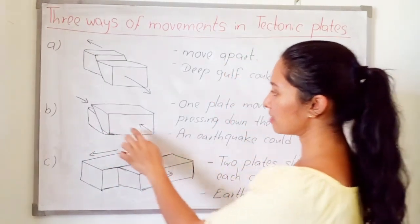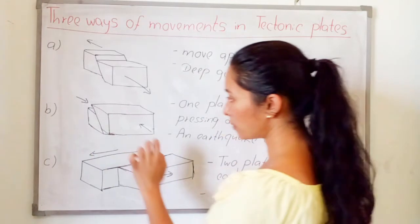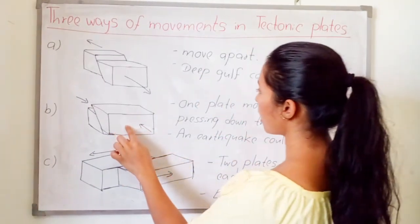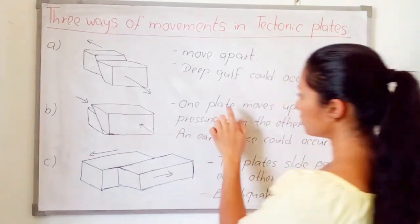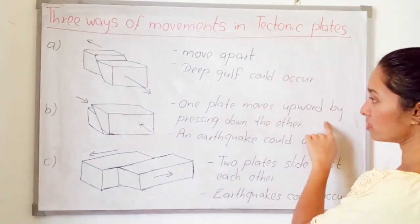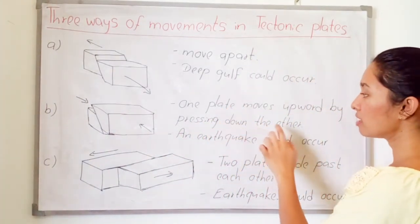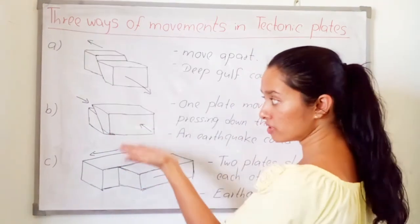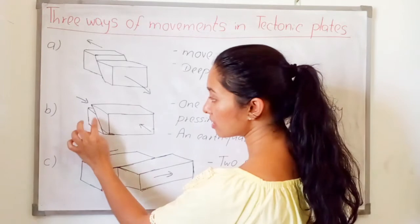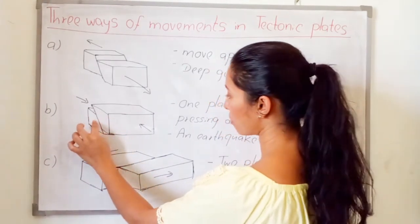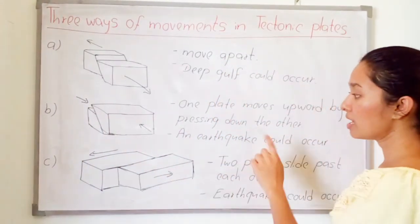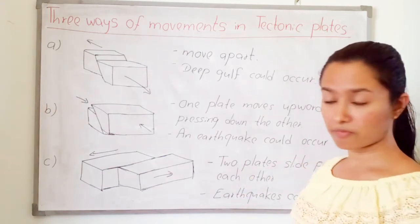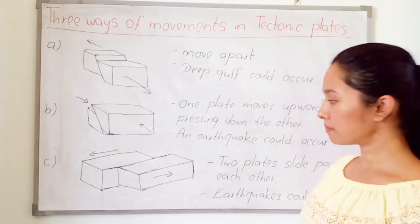The second type of movement: one plate moves upward by pressing down the other. One plate moves upward by pressing another one down. Because of this movement, an earthquake could occur.